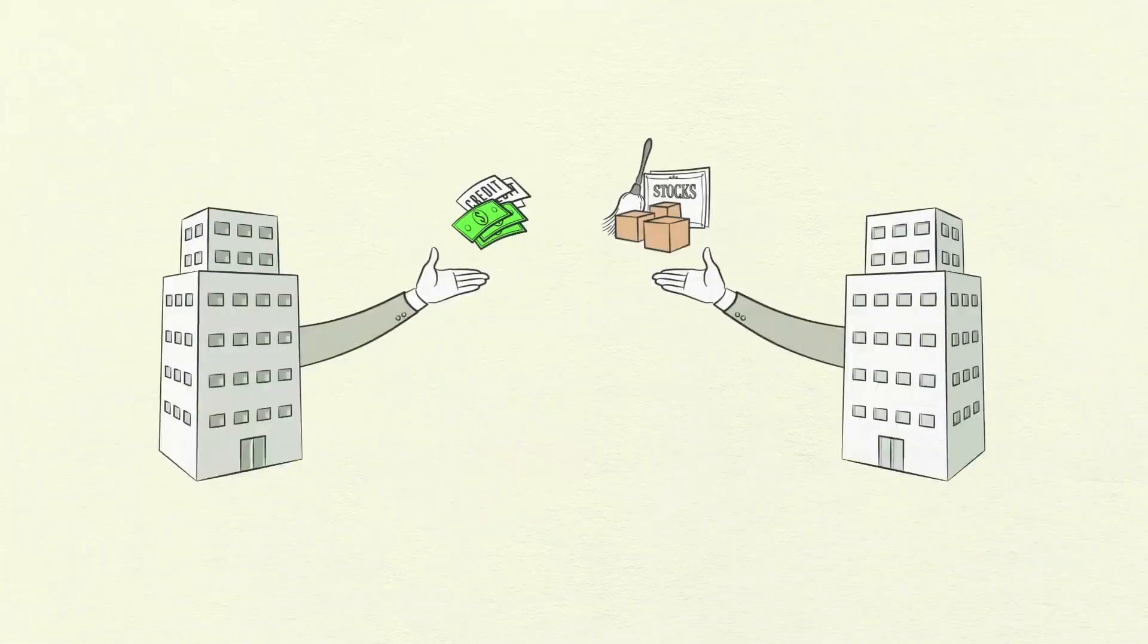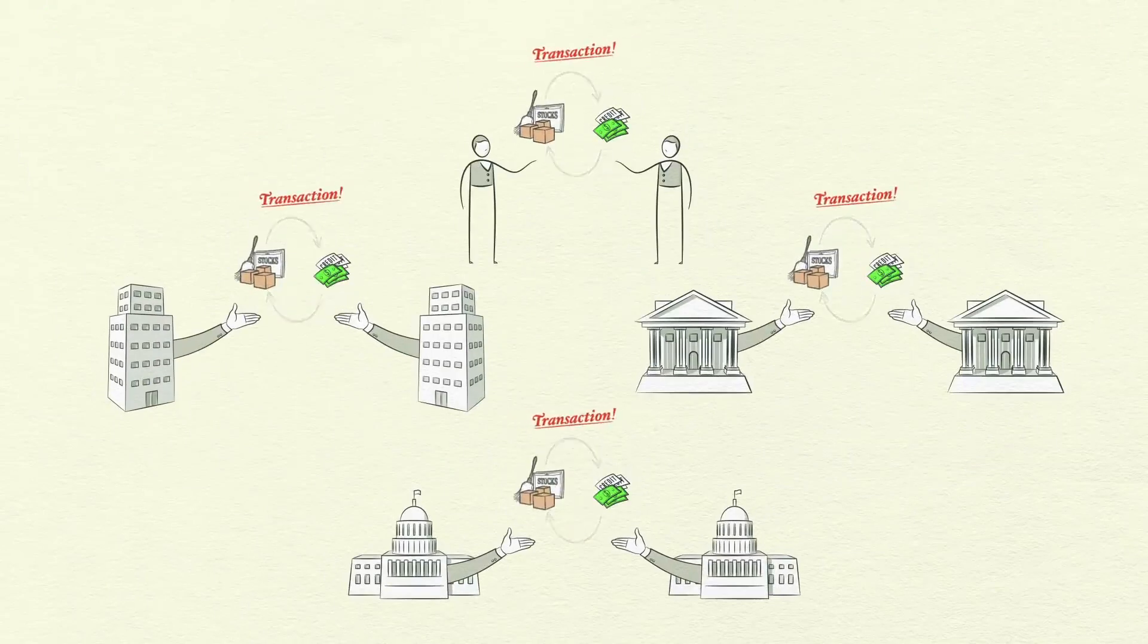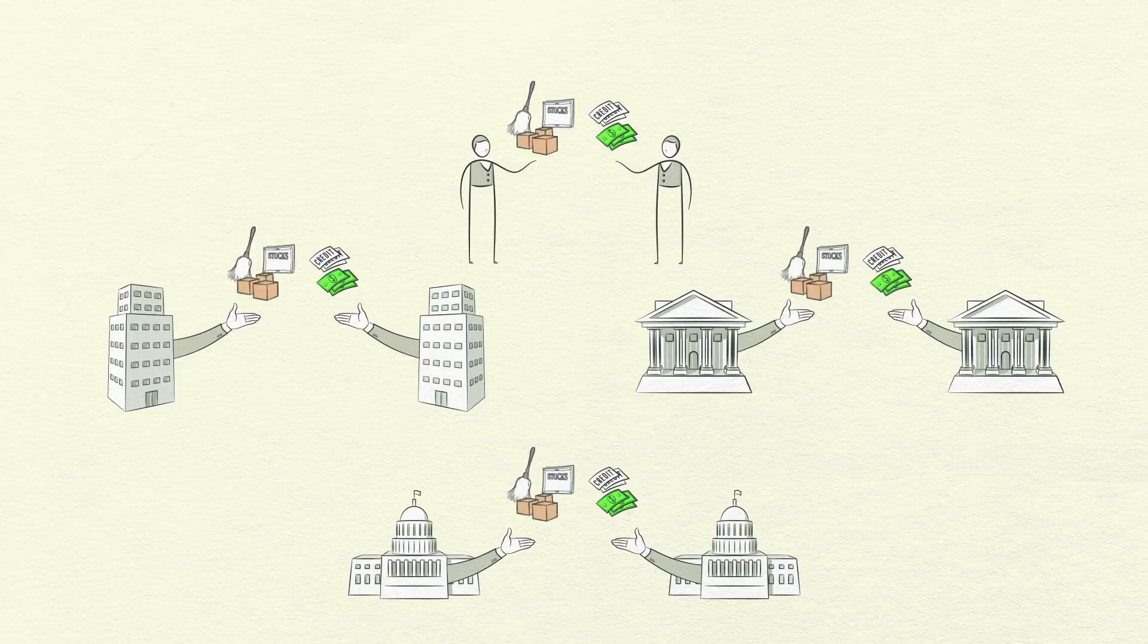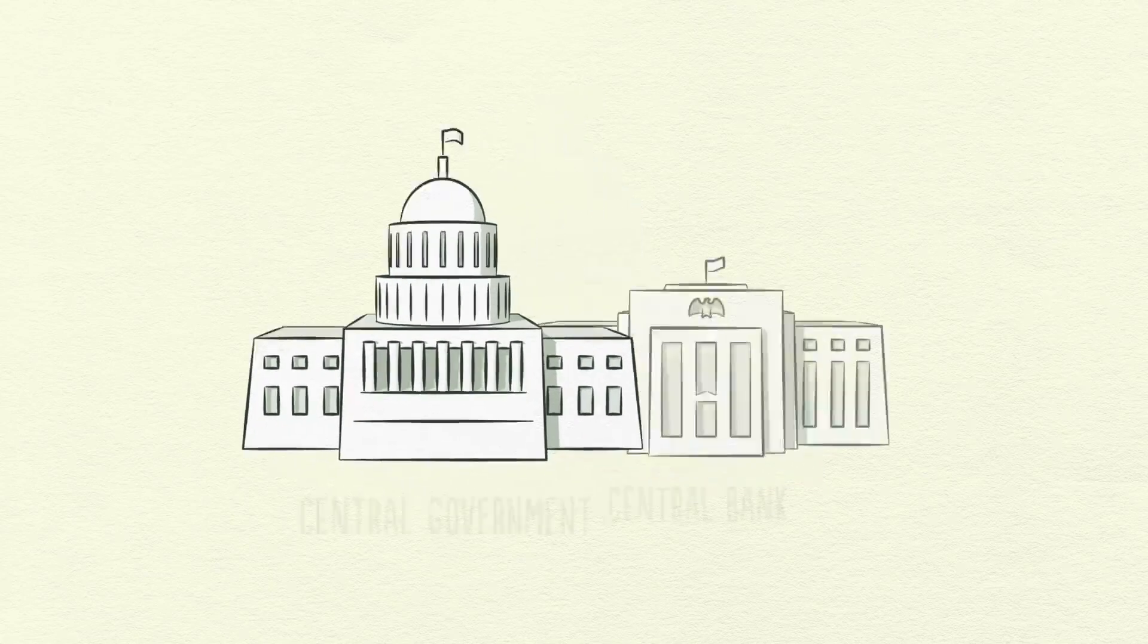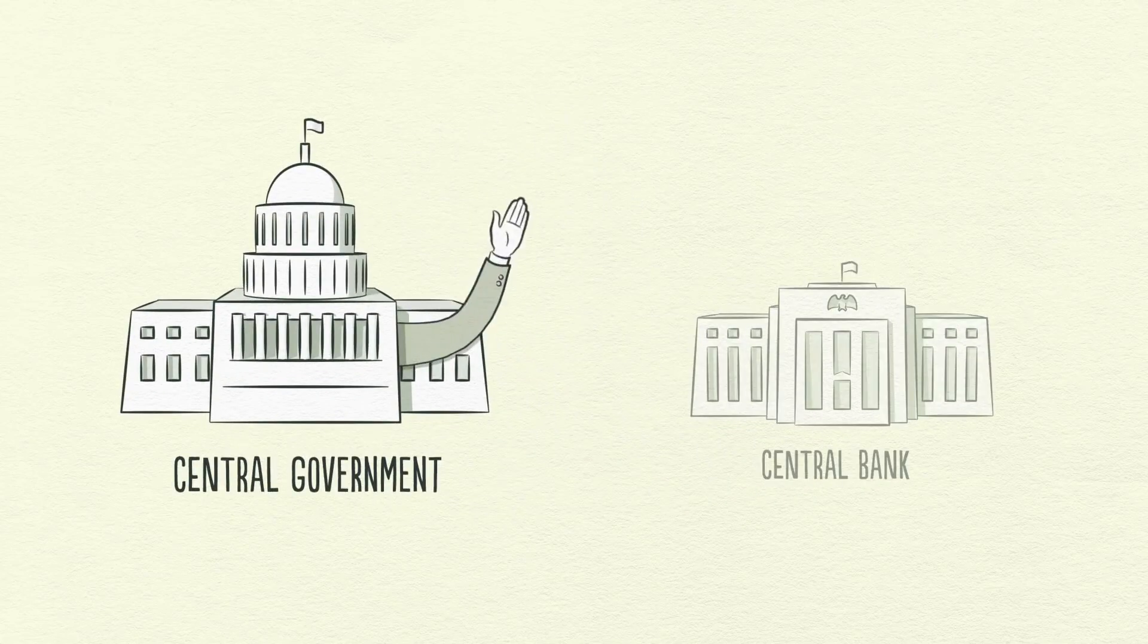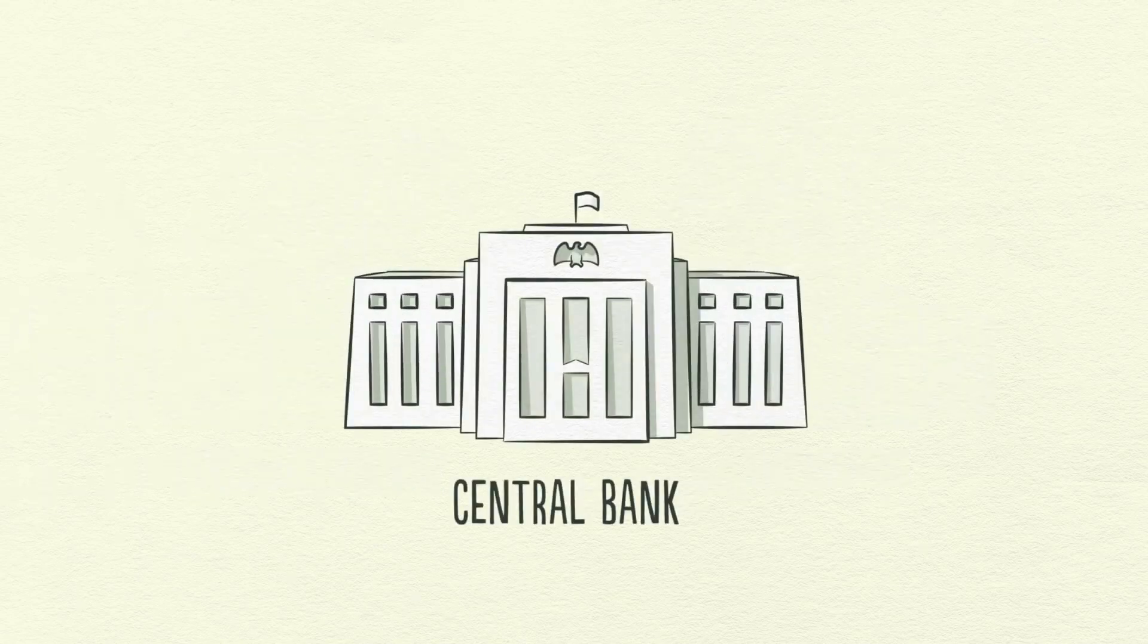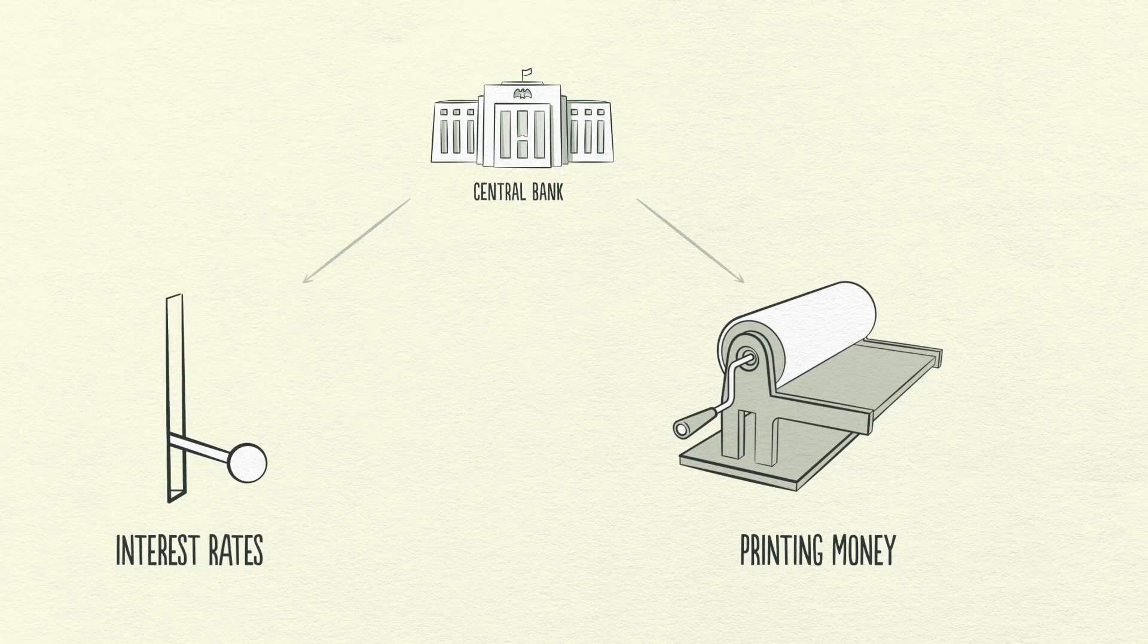People, businesses, banks, and governments all engage in transactions, exchanging money and credit for goods, services, and financial assets. The biggest buyer and seller is the government, which consists of two important parts: a central government that collects taxes and spends money, and a central bank, which is different from other buyers and sellers because it controls the amount of money and credit in the economy. It does this by influencing interest rates and printing new money.